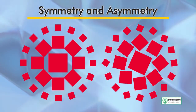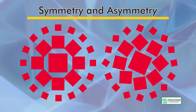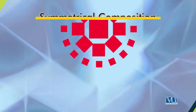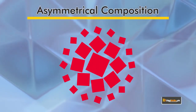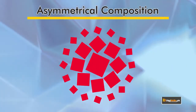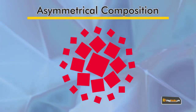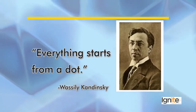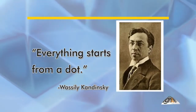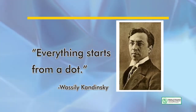Symmetry and asymmetry is a small but very important concept in design. When dots are arranged in a particular sequence, we call it a symmetrical composition. When dots are arranged differently, we call it an asymmetrical composition. The famous painter Wassily Kandinsky says: 'Everything starts from a dot.'